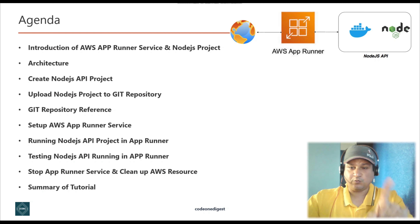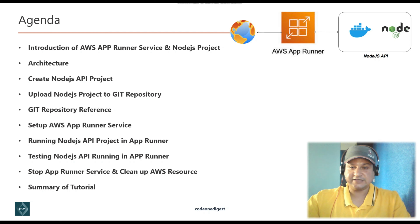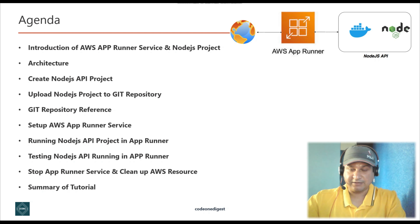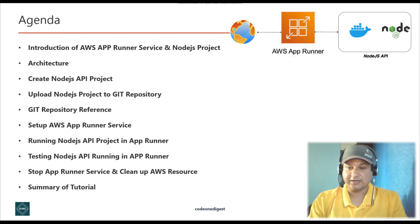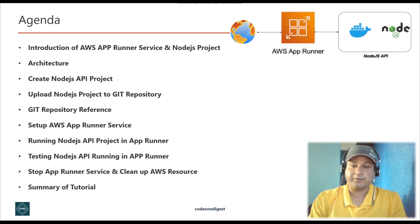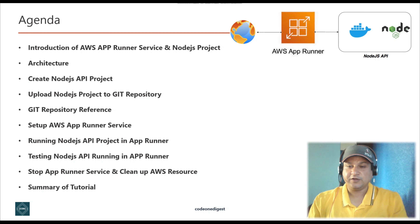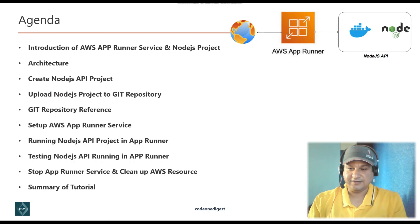Stay with me and watch this tutorial till the end. In 10 minutes you will be able to run a containerized application — your Node.js or Java application — into AWS App Runner service. This is a very new service AWS launched about two years ago. Many people are unsure when to use App Runner and when to use ECS Fargate. We'll talk about all such scenarios in this video.